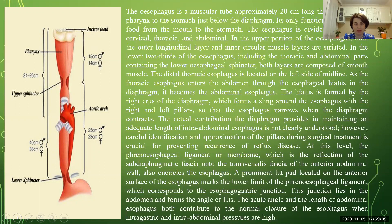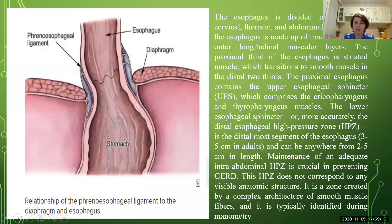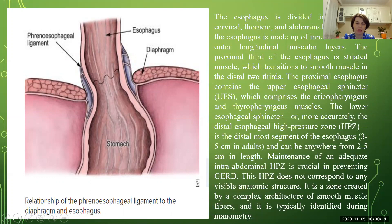However, careful identification and approximation of the pillars during surgical treatment is crucial for preventing recurrence of reflux disease. The esophagus is divided into three main parts: cervical, thoracic, and abdominal. The body of the esophagus is made up of inner circular and outer longitudinal muscular layers. The proximal third is striated muscle, transitioning to smooth muscle in the distal portion. The proximal esophagus contains the upper esophageal sphincter, comprising the cricopharyngeus and thyropharyngeus muscles. The lower esophageal sphincter, more correctly named the distal esophageal high pressure zone, is the distalmost segment of the esophagus, usually three to five centimeters long in adults.